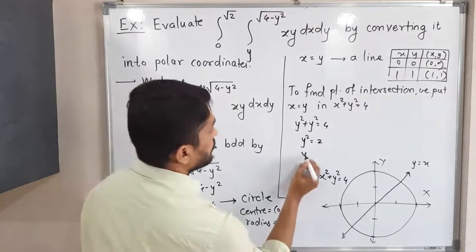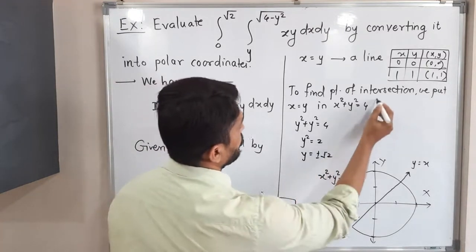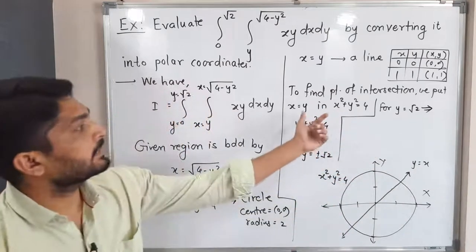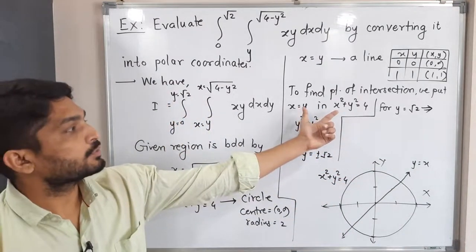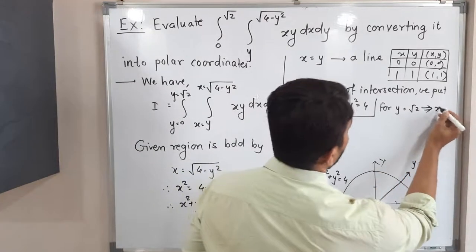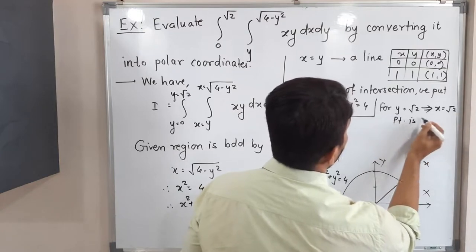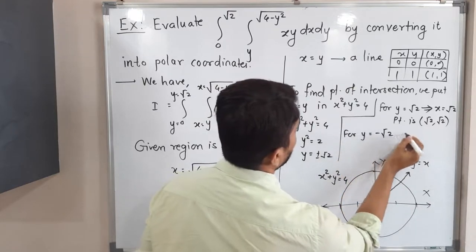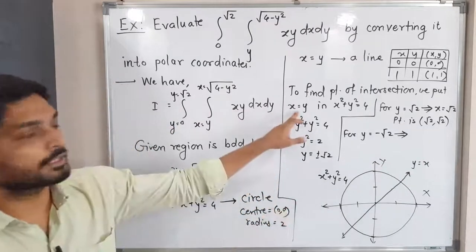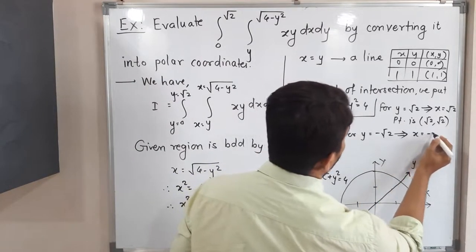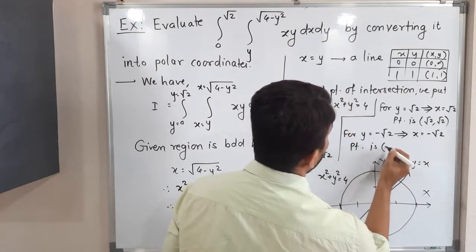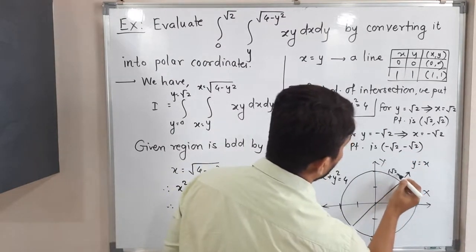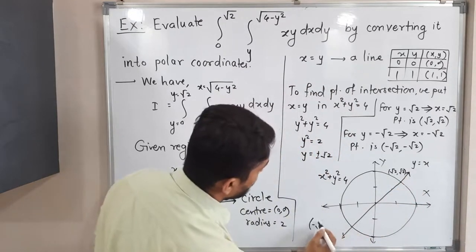Taking the square root, y = ±√2. For y = √2, putting this into x = y gives x = √2, so the first point is (√2, √2). For y = −√2, we get x = −√2, so the second point of intersection is (−√2, −√2).